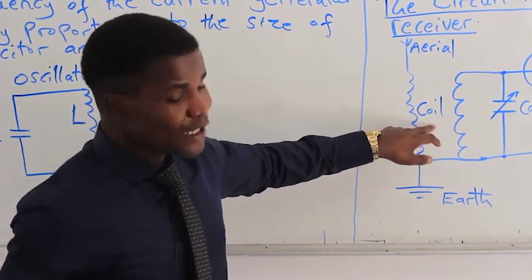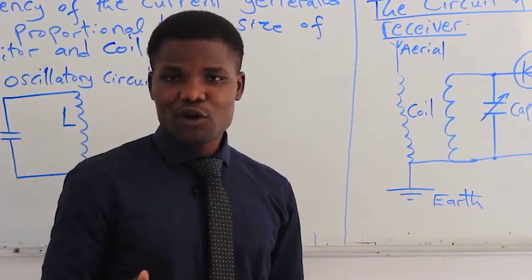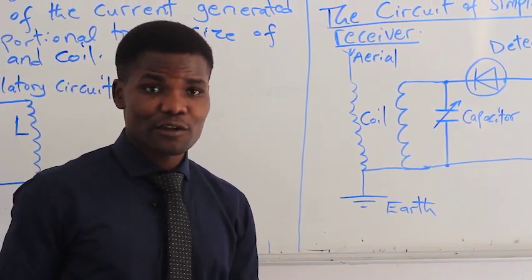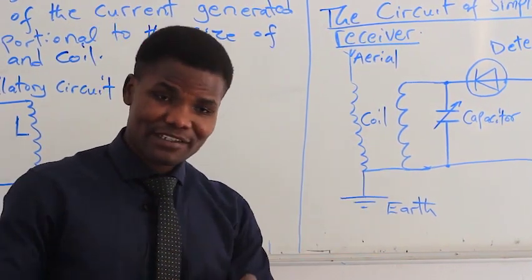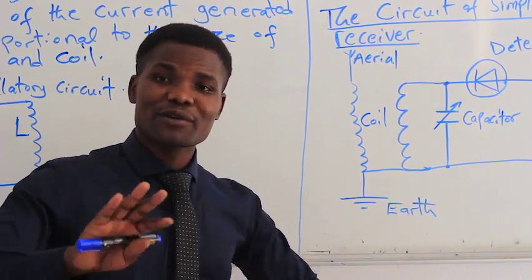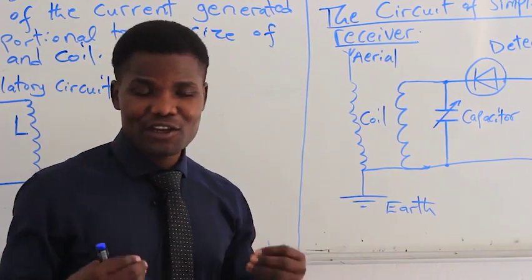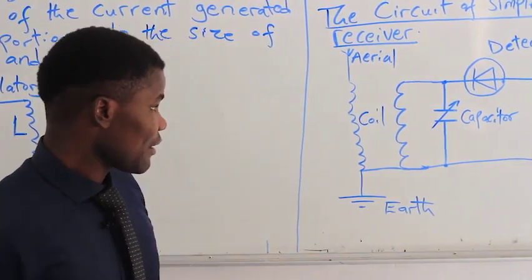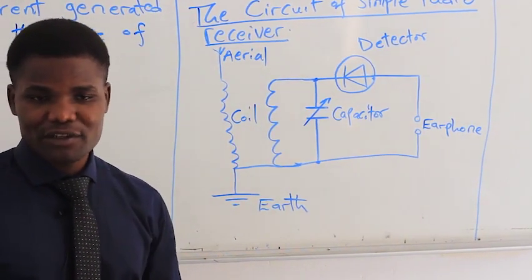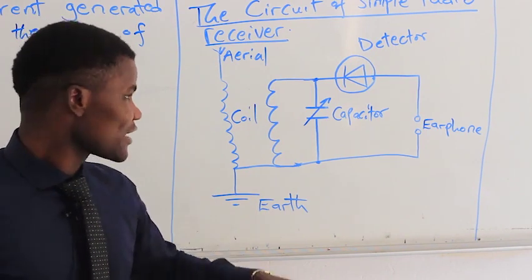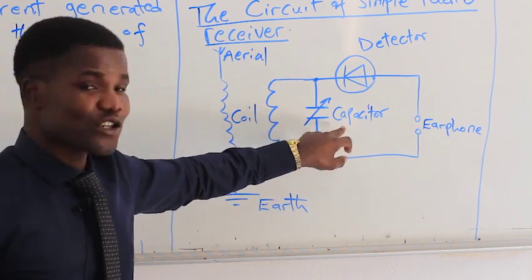The coil helps you extract audio frequency signals from radio frequency signals. In simple terms, this section of the receiver separates audio frequency signals from radio frequency signals so that you only receive what is suitable for hearing, and you don't damage the eardrum. The capacitor essentially stores electrical energy and gives it out when needed — that is the function of the capacitor here.